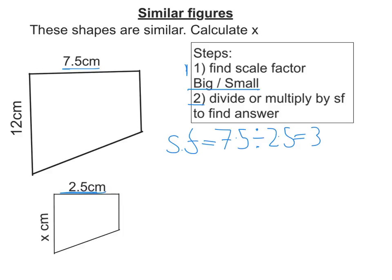Now I'm looking to find a smaller side. So to find x, I would take 12 — I would divide by 3, because I'm finding a smaller side. So 12 divided by 3 is 4. So x is 4 centimetres.